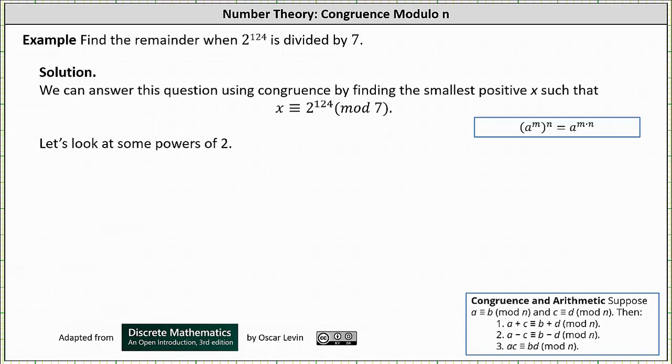Because the number is expressed as a power of 2, let's begin by determining congruences for powers of 2 mod 7.